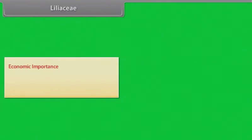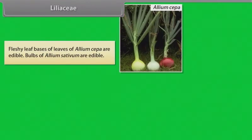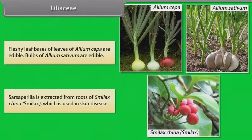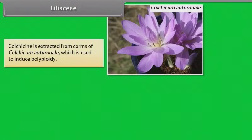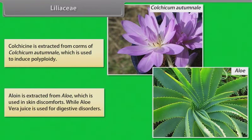Liliaceae economic importance — Many plants belonging to this family are good ornamentals, for example Tulipa, Gloriosa, Lilium, Aloe, Ruscus, Asparagus, Yucca, Dracaena etc. Fleshy leaf bases and leaves of Allium cepa are edible; bulbs of Allium sativum are edible. Sarsaparilla is extracted from roots of Smilax china, used in skin disease. Colchicine is extracted from corms of Colchicum autumnale, used to induce polyploidy. Aloin is extracted from Aloe, used in skin discomforts, while Aloe vera juice is used for digestive disorders.